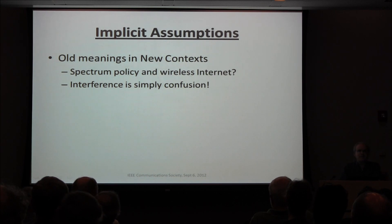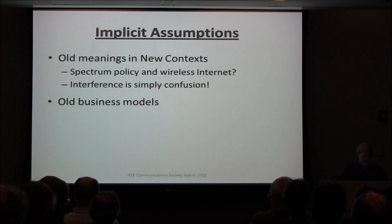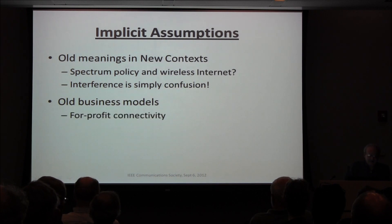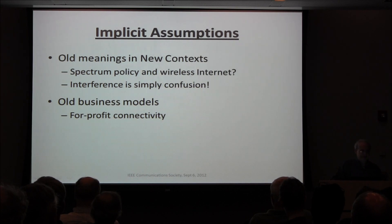We have a lot of this confusion implicit in our language, and policymakers don't know any better. Experts are telling them there are only seven colors — seven days of the week, that's why we have indigo. We have an old business model that connectivity is for profit, as if roads were for profit and you closed down all the unused roads, or as John Stewart pointed out, we closed down the states that weren't profitable enough.